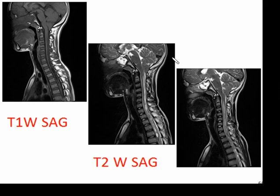Coming to the next case, you can see herniation of the tonsil into the posterior subarachnoid space at the lower cisterna magna with syringohydromyelia. This is a classical case of Chiari malformation type 1 (ACM1).